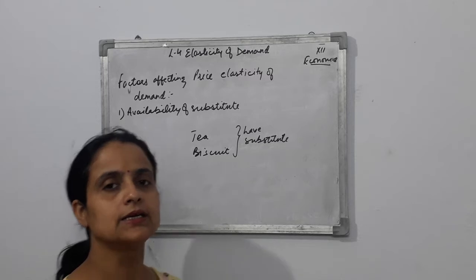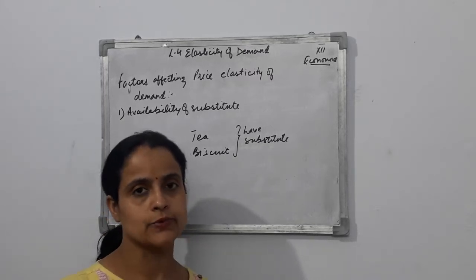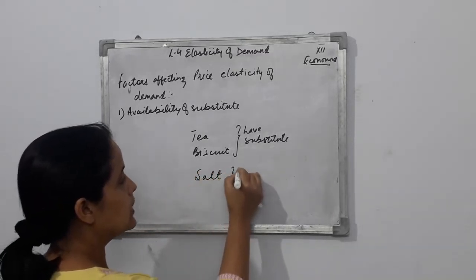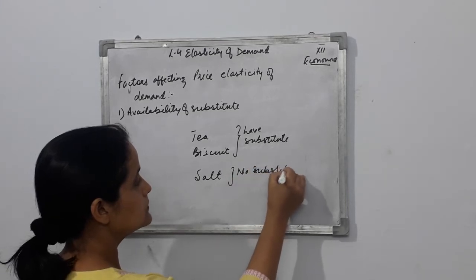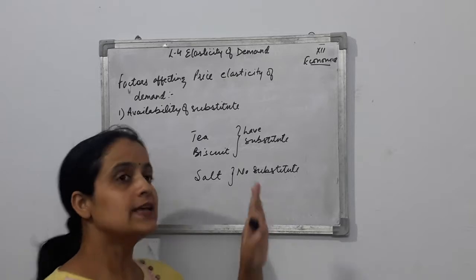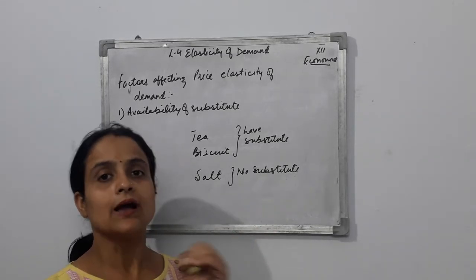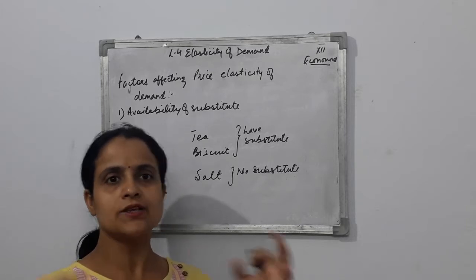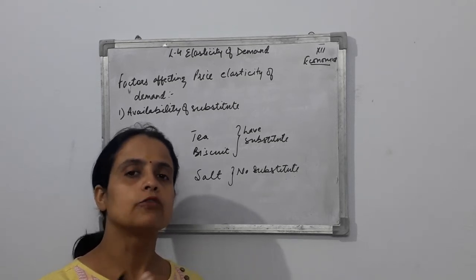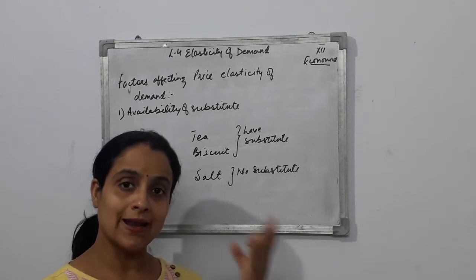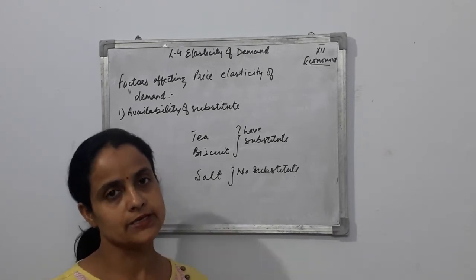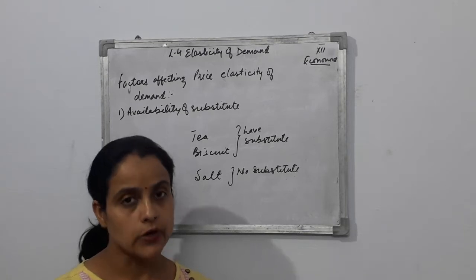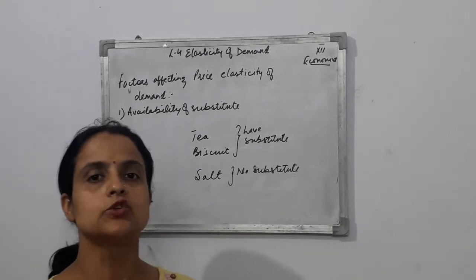If you increase the price of one biscuit, you will shift your demand to another biscuit — so the demand is elastic. But there are certain things which do not have a substitute, like salt. Salt has no substitute. If the price of salt rises, you have no alternative, so there will be no significant change in demand. So if a good has a substitute, the demand is elastic; if it does not have a substitute, the demand is inelastic.